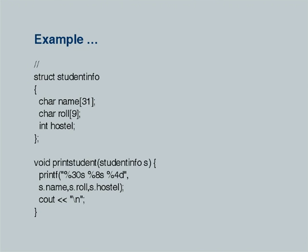Ordinarily when we write to and read from files, we have always considered text files. Using `cin` we are able to dissect different components typed on a line, and those components are read and interpreted as either strings or numbers and correctly assigned after conversion into internal memory structure. Here is a function to print students — notice we are printing 30 characters for name, 8 characters for roll number, and `%4d` for the hostel number right justified. When we print `s.hostel`, the internal binary representation gets converted into the characters you see.